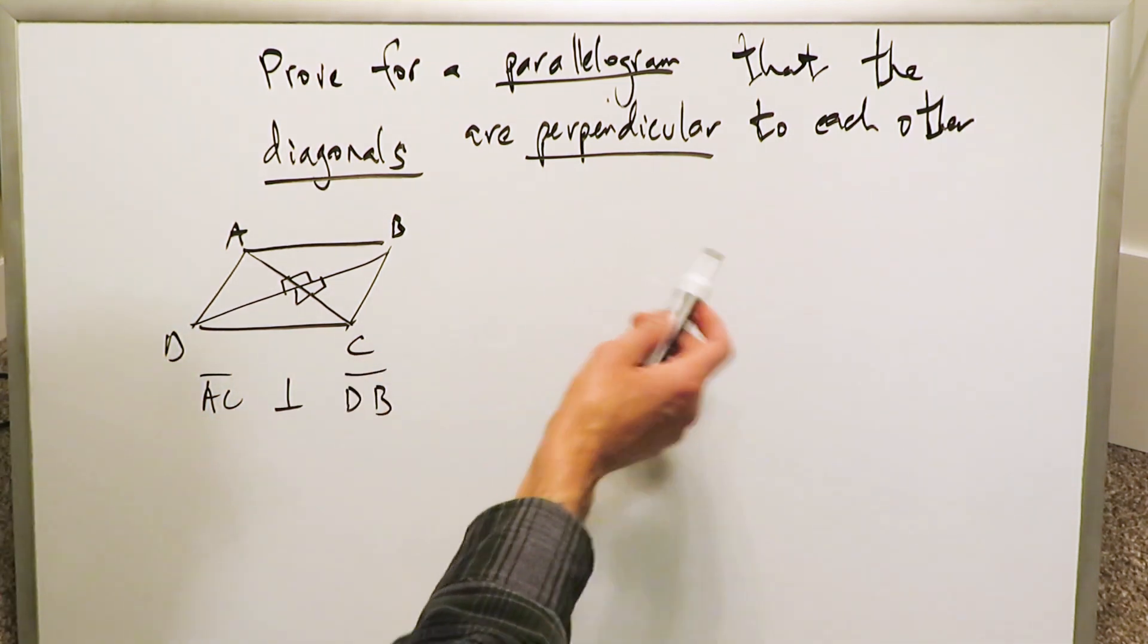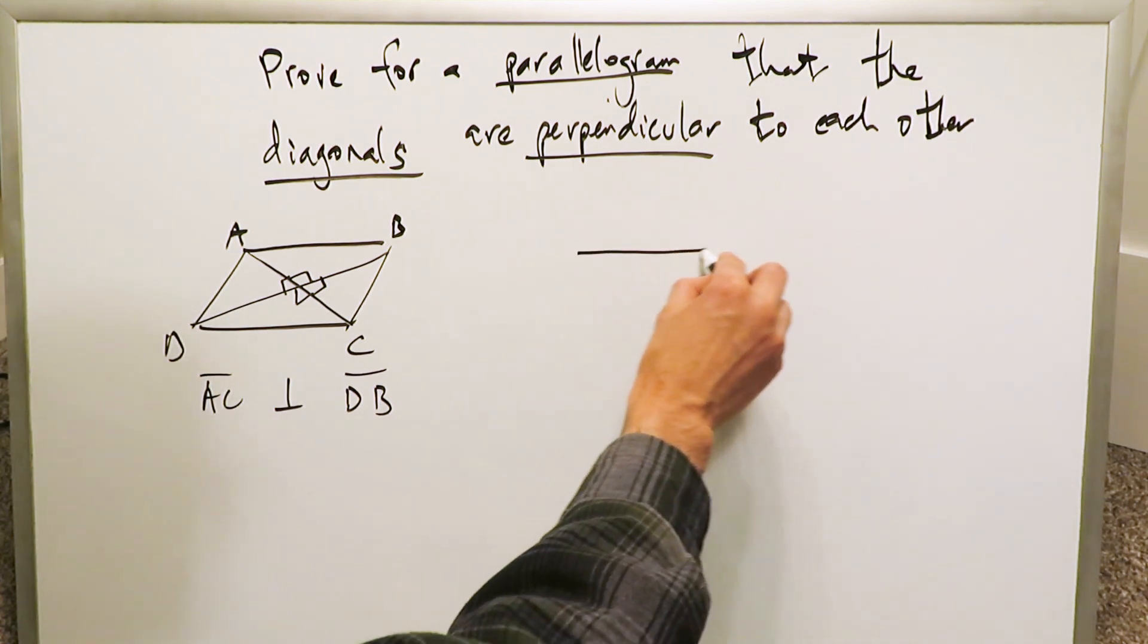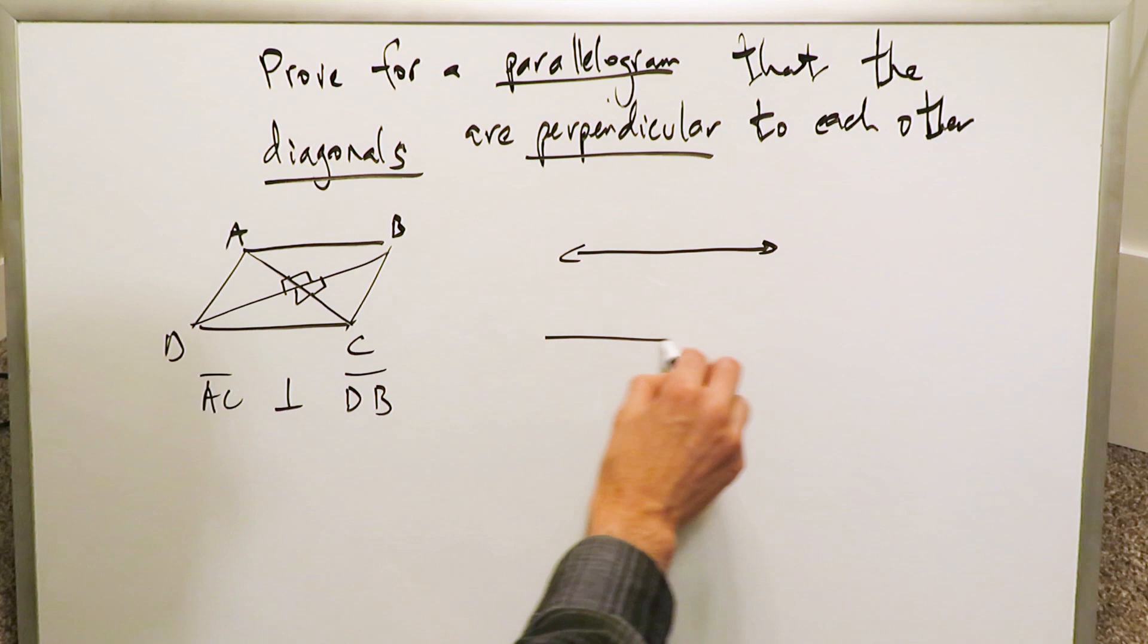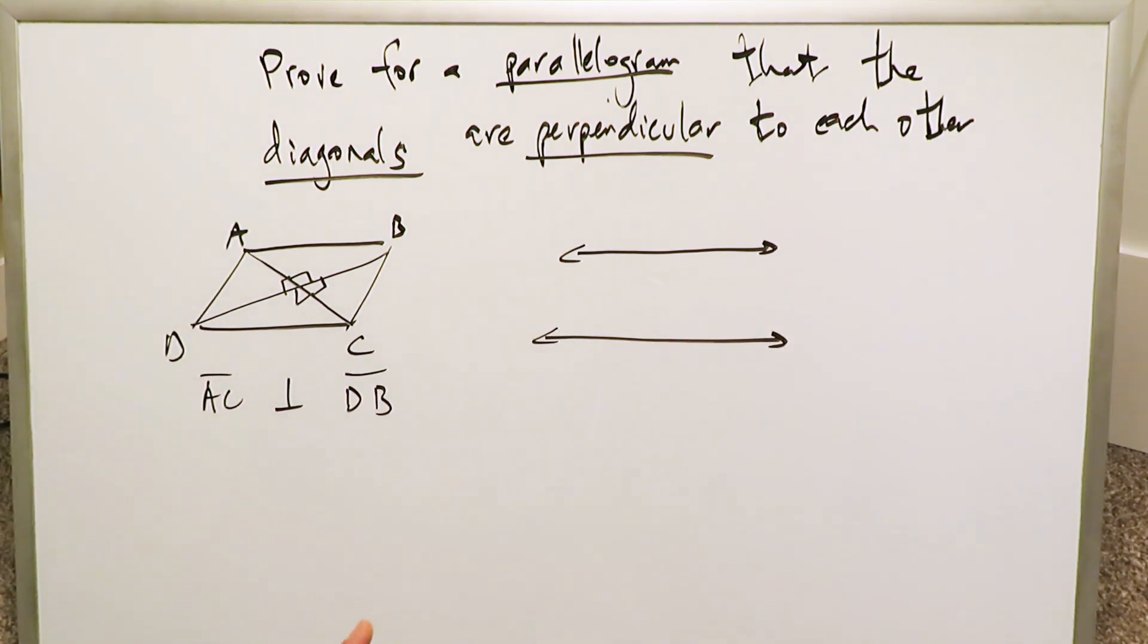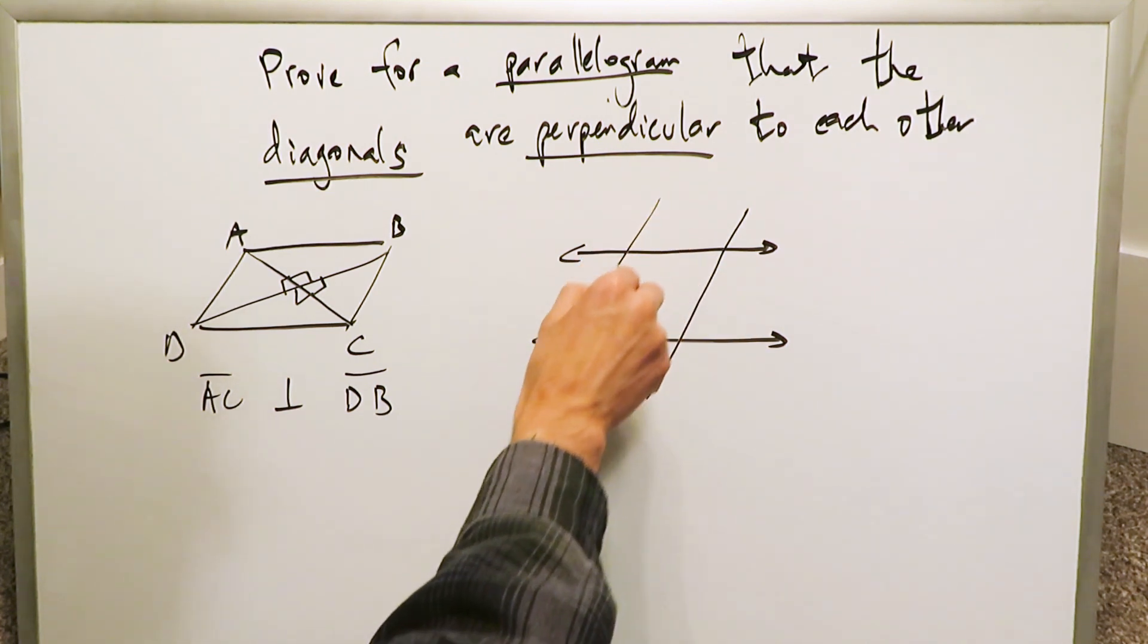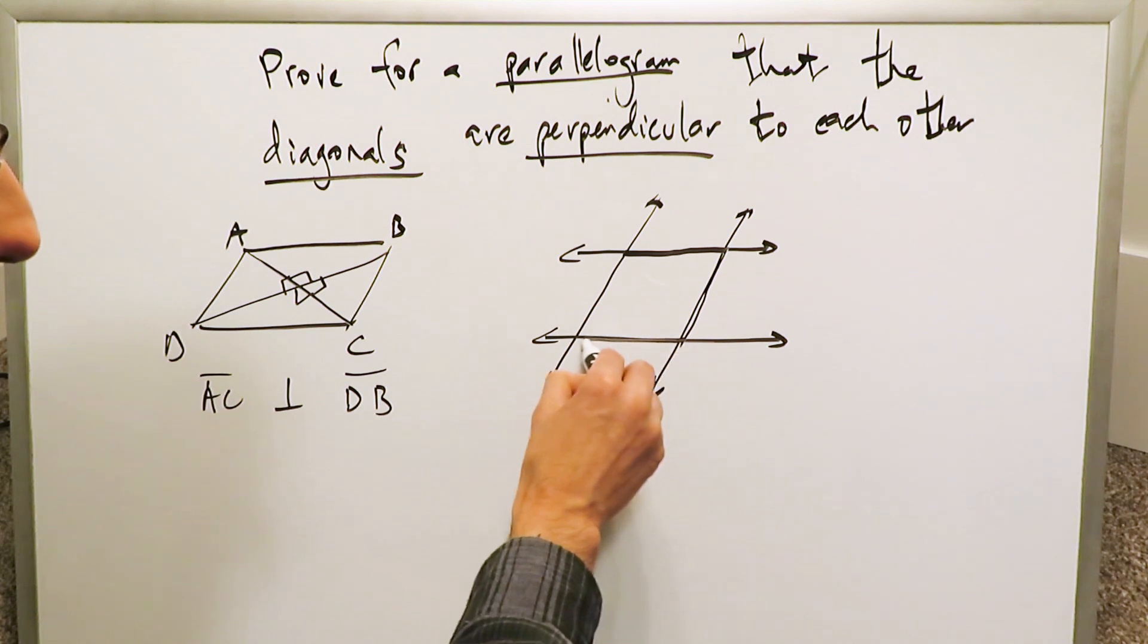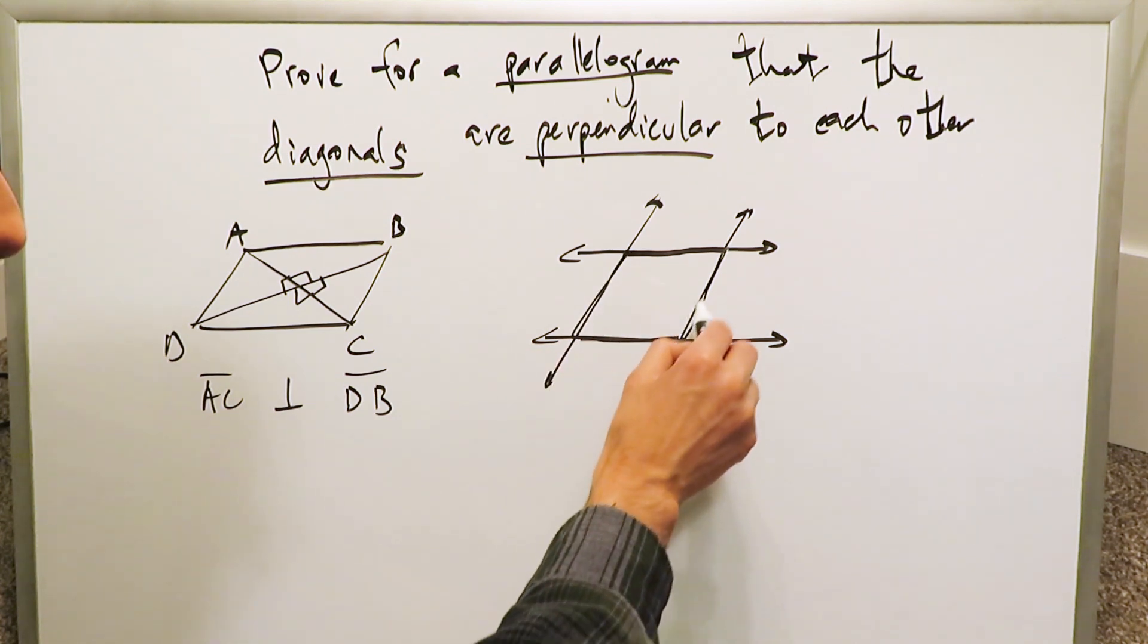How would you show that? And that right there is the subject of this video. There are multiple ways. I'm just showing you one way. Start with drawing a pair of parallel lines. Then draw two transversal lines, but the two transversal lines are parallel to each other. When you do this, you see a parallelogram will develop exactly as you would imagine.